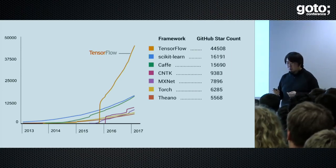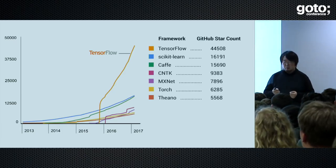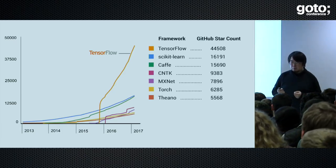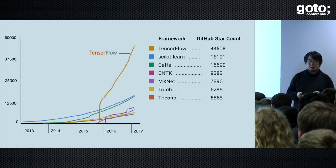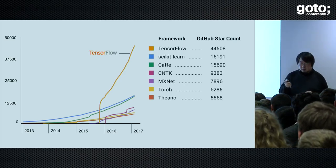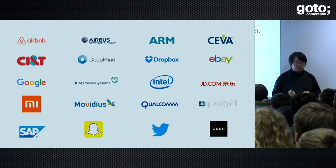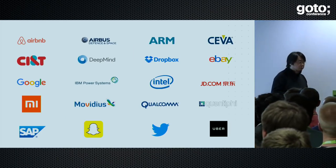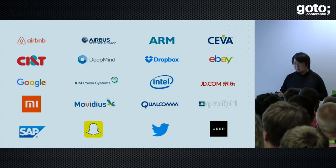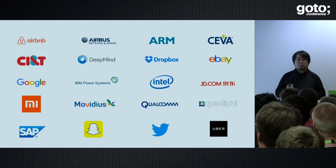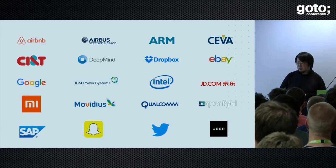With those benefits, TensorFlow has become the most popular framework for deep learning development in the world. Compared with other frameworks such as Caffe, CNTK, or MXNet, it is by far the most popular. There are so many customers actually using TensorFlow, including Airbus, Dropbox, eBay, Qualcomm, and even IBM is selling TensorFlow with their hardware servers.